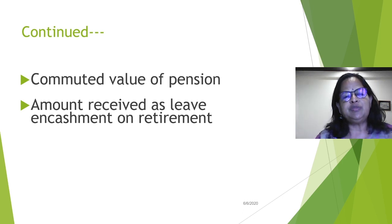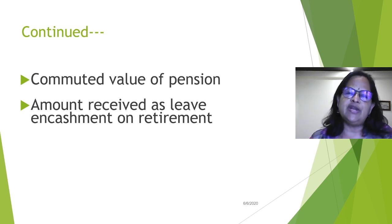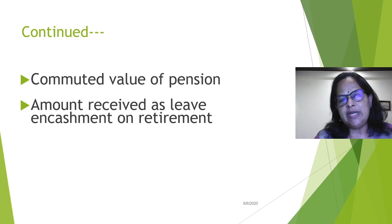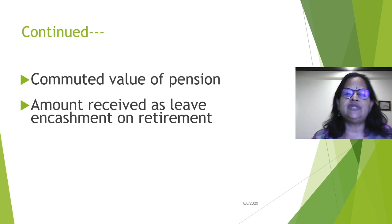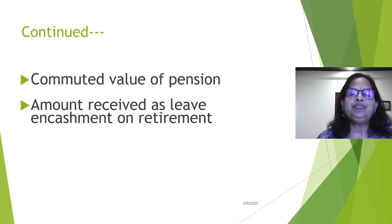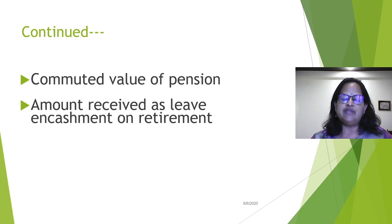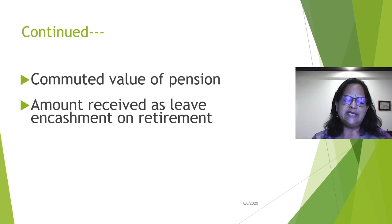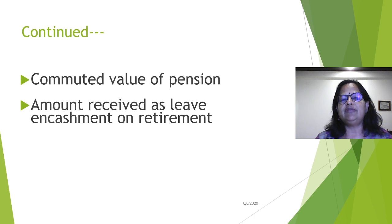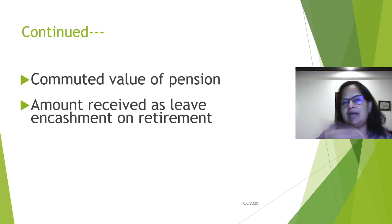For government employees, earned leave works like a bank account — every year you work, 10 days of leave are credited to your account. For example, I have 28 years of service so 280 days of leave should be credited, but my balance is only 190 or so because sometimes my casual leave has exceeded three days. Also remember: if you take leave on Friday and report back on Tuesday, Friday, Saturday, Sunday, and Monday are all counted as four days of leave — Sundays and public holidays in between casual leave are counted as leave too. This is how earned leave gets reduced.